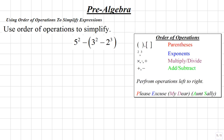Let's use order of operations to simplify. We're given 5 squared minus 3 squared minus 2 cubed. To simplify this expression using order of operations, we'll refer to our information on the right. Beginning from left to right, we'll perform the operations from top to bottom.